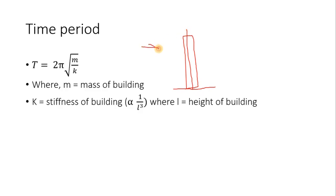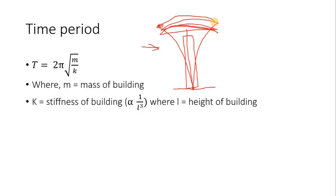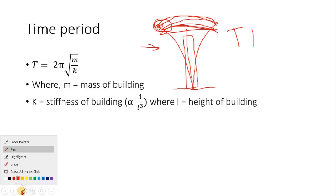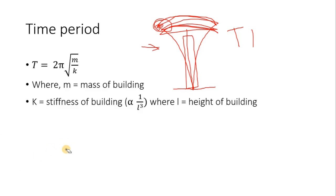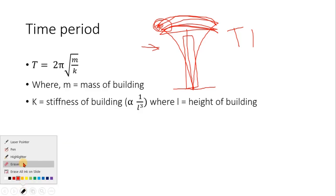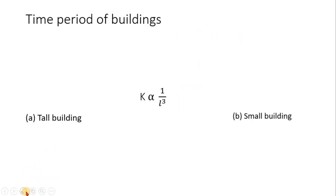When there is an earthquake load, the building will sway — it will go one way, then return to its original position, and keep oscillating between these two extremes. The time period is the time taken by the building to start from one side and return to the same position.